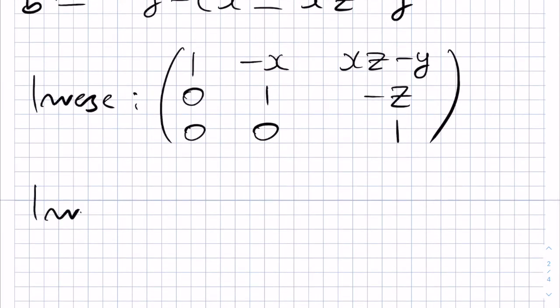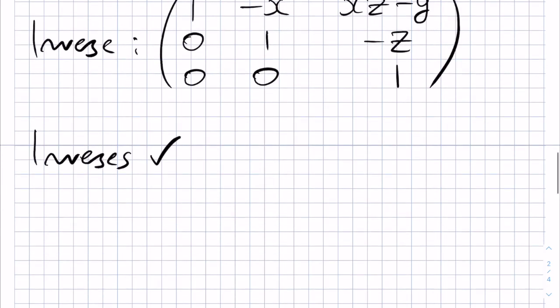Therefore, we have inverses, and as a result, we have met all of the conditions that we need for this to be a group. So, the Heisenberg group does indeed form a group under matrix multiplication, and we're done.